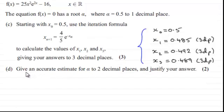Now in part D, we're asked to give an accurate estimate for α to two decimal places, and justify your answer for two marks. So if you'd like to have a go at this, I'll just give you a moment to pause the video, and when you come back, you might want to fast forward, or I'll take you slowly through the work solution.